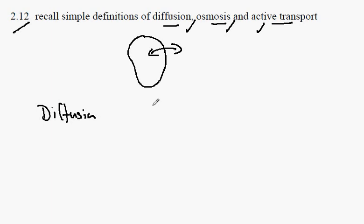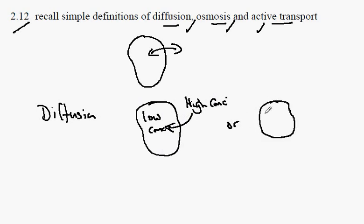Diffusion is when molecules move from a region of their high concentration to a region of their low concentration. In this case, we're showing molecules moving from outside the cell to inside the cell, or the high concentration of the molecules may be inside the cell and they will diffuse to the outside of the cell.